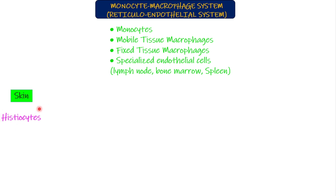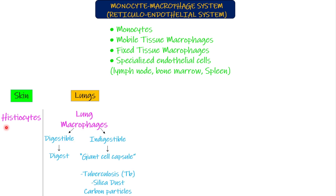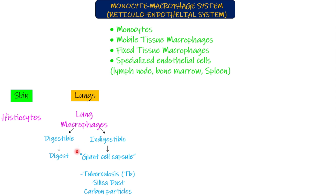The second entry point is the lungs. We are continuously breathing and inhaling, so any foreign organism in the air can enter the body through the lungs. Lungs have specialized macrophages known as lung macrophages. A foreign body entering the lungs can be digestible or indigestible. If digestible, macrophages will eat and digest it. If indigestible, the macrophages cannot kill it, and instead will form a giant cell capsule around that foreign invader.